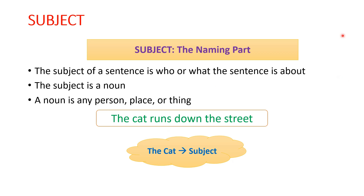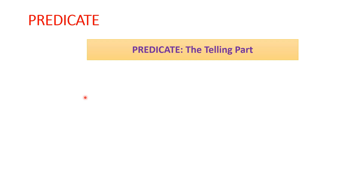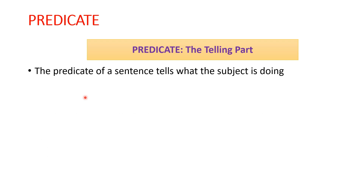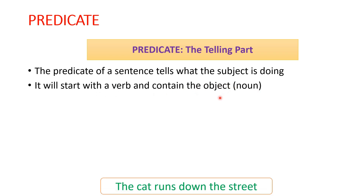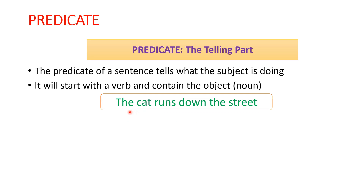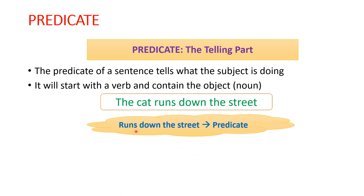Next, we will see what is a predicate. The second part of the sentence is the predicate. The predicate is nothing but the telling part — it tells what the subject is doing. Considering the same example, 'The cat runs down the street,' runs down the street is the predicate part.